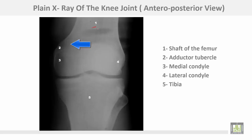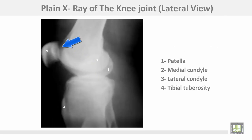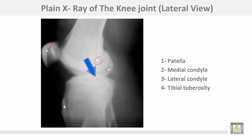This plain X-ray of the knee joint shows the shaft of the femur, the adductor tubercle, medial condyle, lateral condyle, and the tibia. The lateral view of the knee joint shows the patella, the medial condyle, lateral condyle, and the tibial tuberosity.